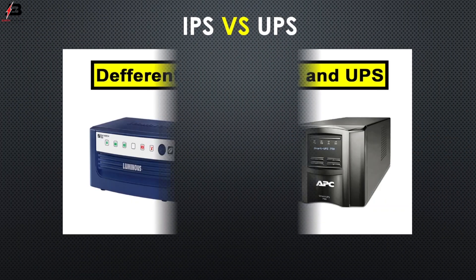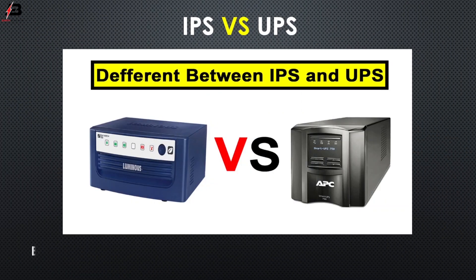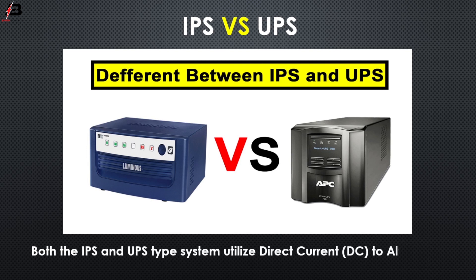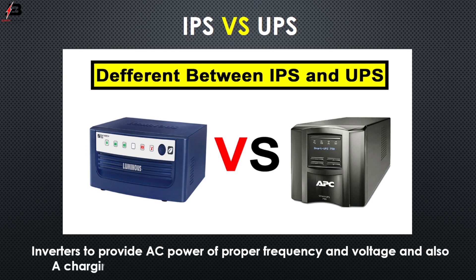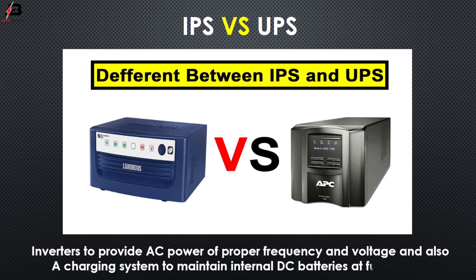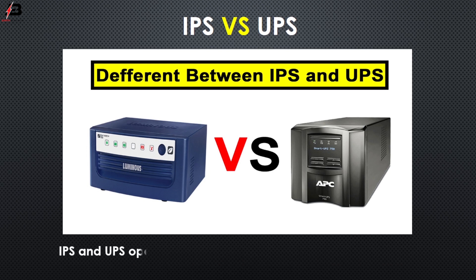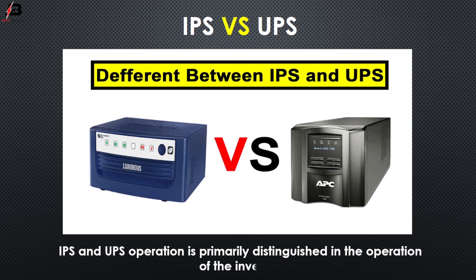Both the IPS and UPS type systems utilize direct current DC to alternating current AC invertors to provide AC power of proper frequency and voltage, and also a charging system to maintain internal DC batteries at full charge. IPS and UPS operation is primarily distinguished in the operation of the inverter.